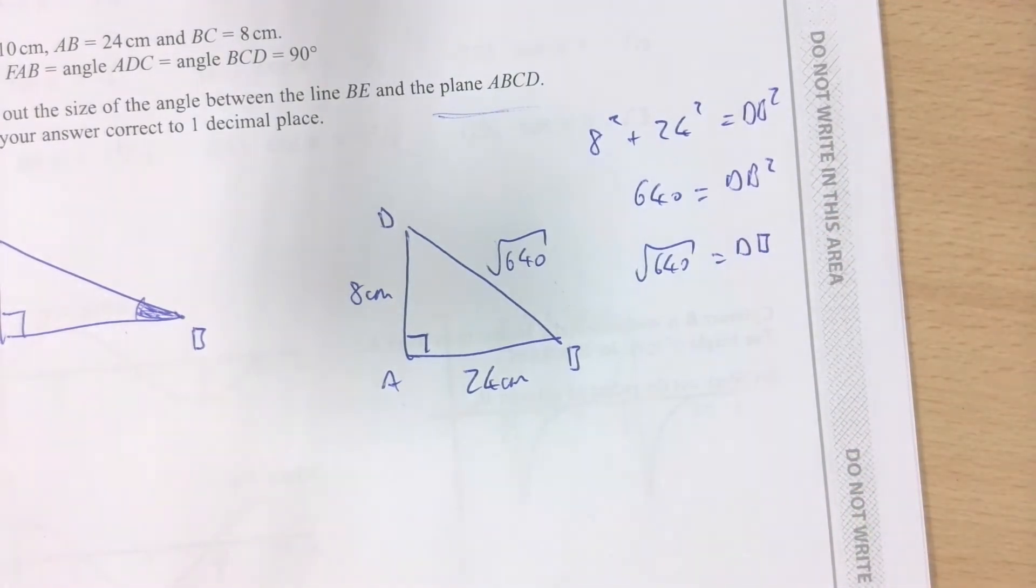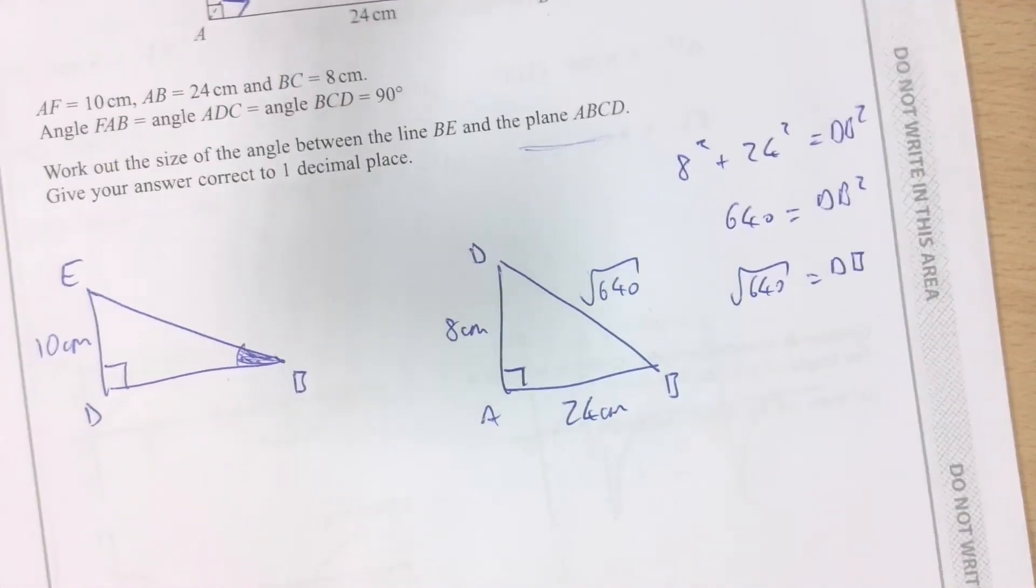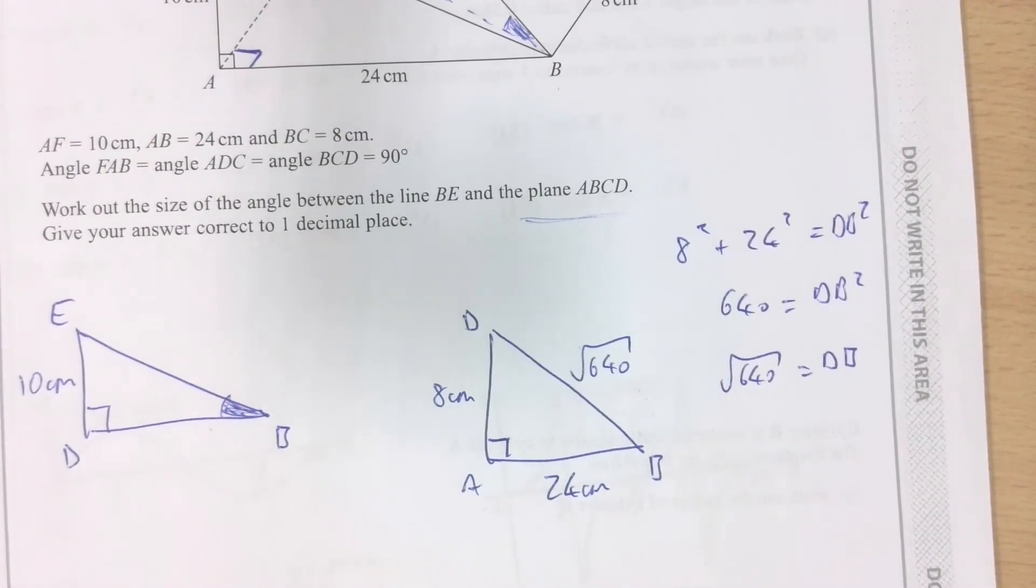Straightforward enough. And actually, I don't really need to use my calculator at all. I could just choose to leave it as the square root of 640. Because having it as a decimal, because that's not a whole number root...